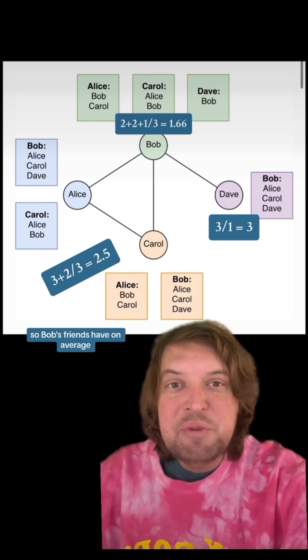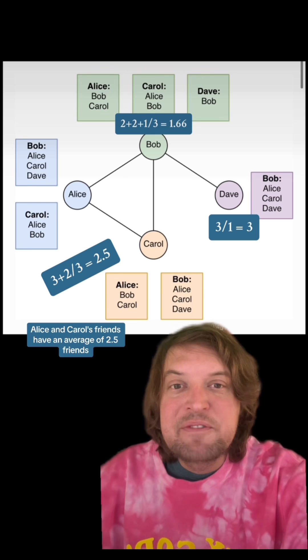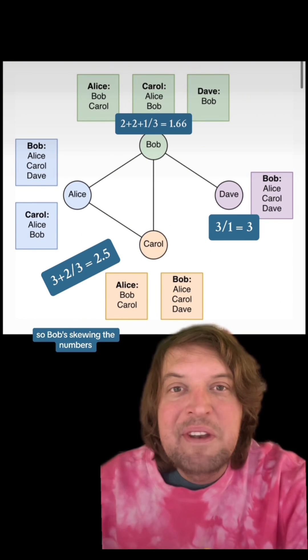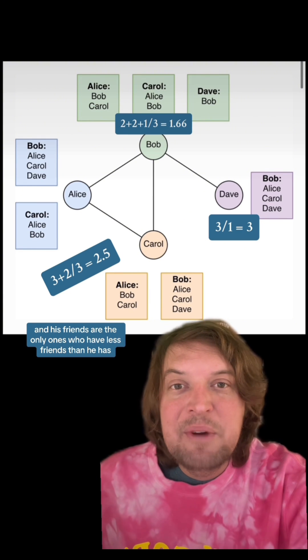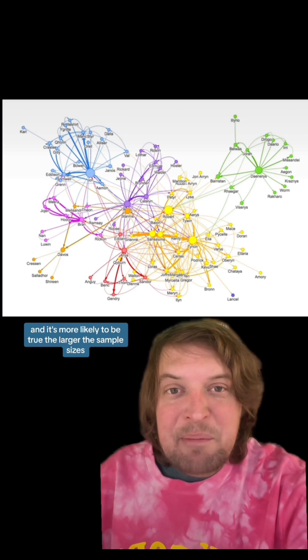Bob's friends have on average 1.67 friends. Alice and Carol's friends have an average of 2.5 friends, and Dave's only friend Bob has 3 friends. So Bob skews the numbers, and his friends are the only ones who have fewer friends than he has. And it's more likely to be true the larger the sample size is.